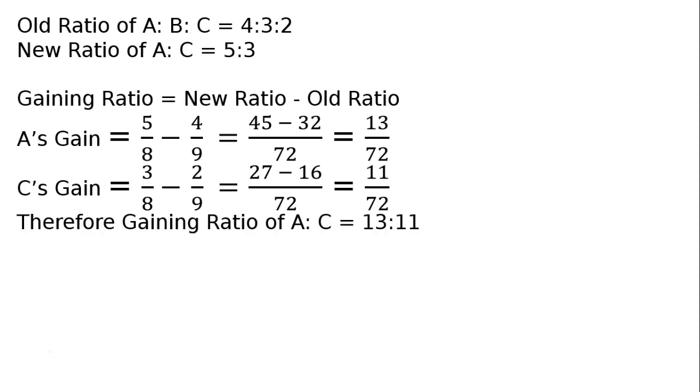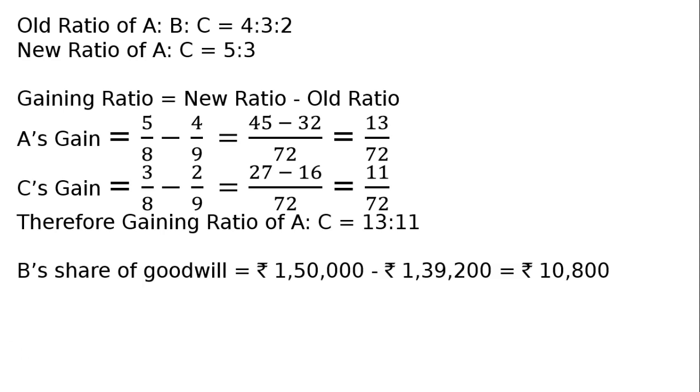Therefore, gaining ratio of A:C is equal to 13:11. This is the gaining share. Now B is retiring, what is B's share of goodwill? B's total payment from A and C at retirement is Rs. 1,50,000.